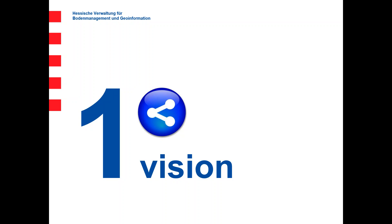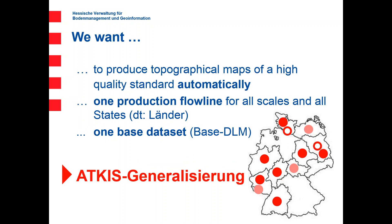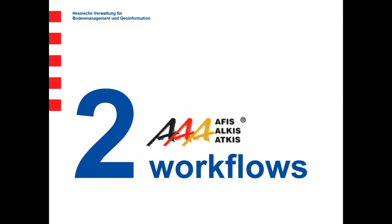In parallel, driven by the necessity to produce maps more frequently and efficiently, a group of 12 states joined together in a cooperation called ATKiS Generalisierung, sharing one vision: to have workflows that support automatic generalization to a large extent, one workflow for all scales, and to start from only one base dataset — the base Digital Landscape Model, called base DLM. The cooperation covers the states you can see in the picture. We were convinced from the start that we needed corresponding landscape models for each scale we derive, which is why we have two workflows.